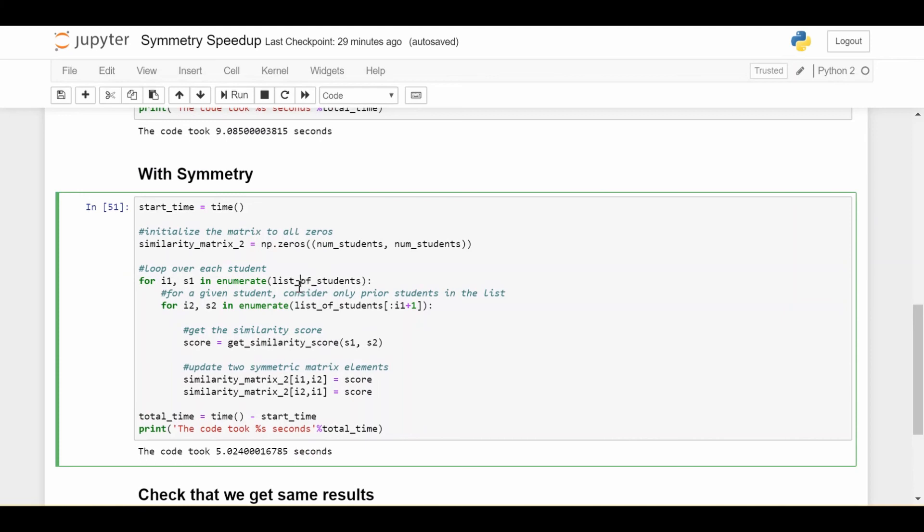So again, similarity or symmetry speed ups aren't going to be crazy. They're just going to be as fast as what's your factor of symmetry, whether it be two or four or eight or whatever, but still something that can give you cut your time down from your program taking 24 hours to 12 hours, which is great. Okay, so until next time.